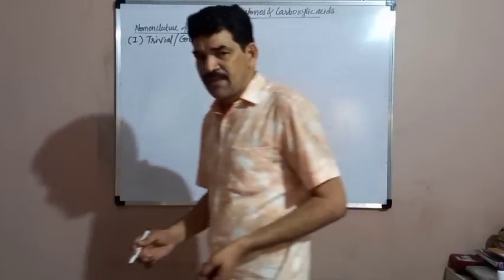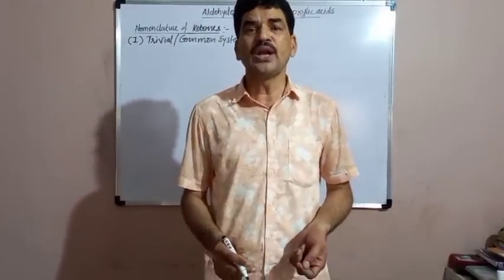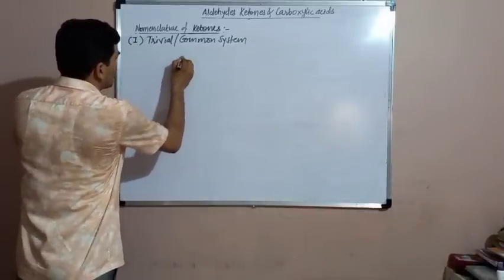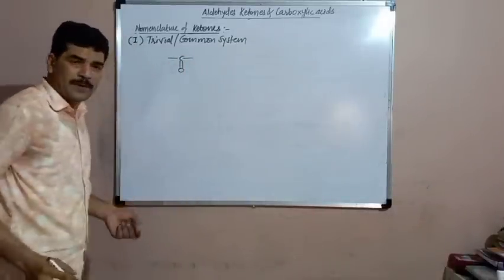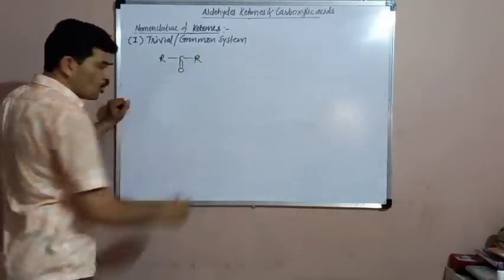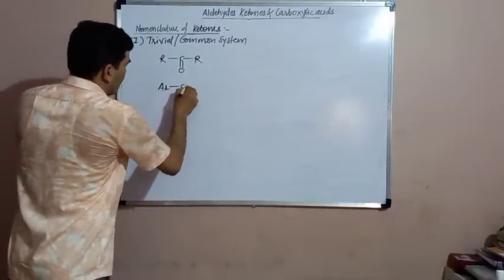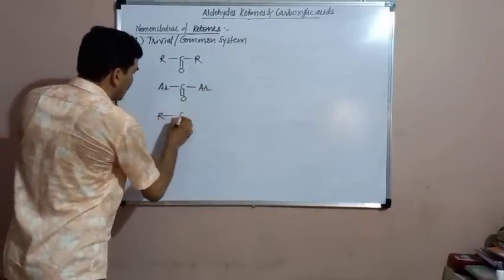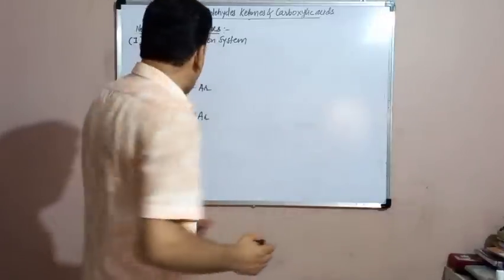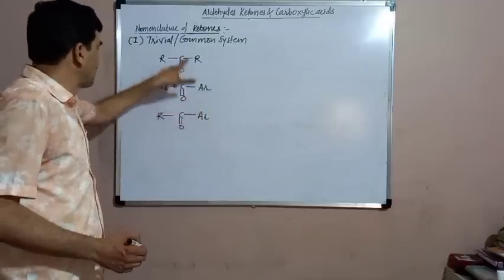In the common system, the names are based on the names of two alkyl groups or aryl groups which are attached to the keto group, that is the carbonyl carbon. In ketones, the functional group is C double bond O. Here two alkyl groups, or aryl groups, or one alkyl and one aryl group are attached to this keto group. The common names are based on the names of these alkyl or aryl groups present in the ketone.